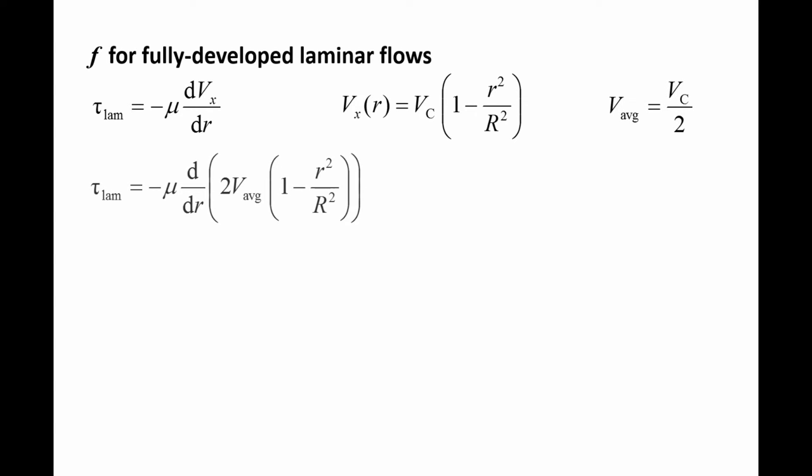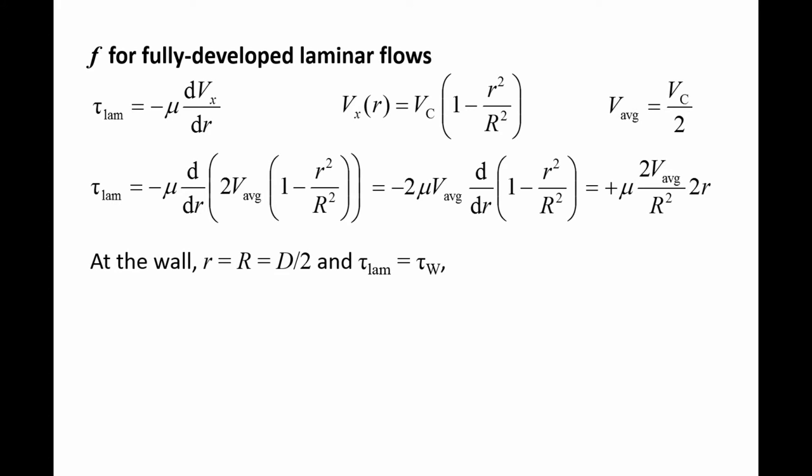Substitute these expressions into the equation for the laminar shear stress and remove 2V average from the derivative because they are constant. After taking the derivative, we are left with mu times 2V average over capital R squared times 2 lowercase r. At the wall, the radial distance is the pipe radius capital R, which is equal to one half the diameter. Additionally, the shear stress is equal to the wall shear stress tau W. Plugging in d over 2 for the pipe radius, we find that the wall shear stress is equal to 8 times the viscosity mu times V average over d.